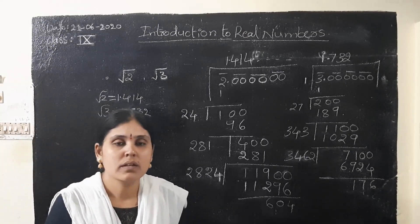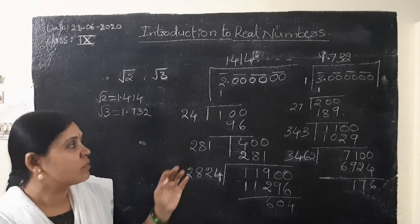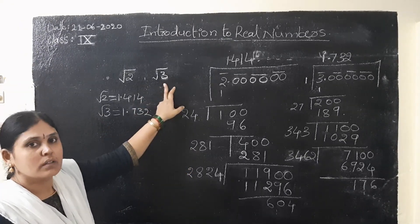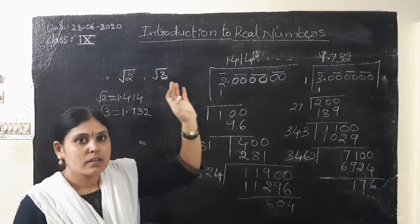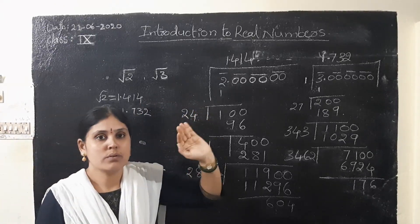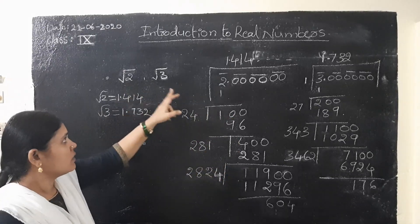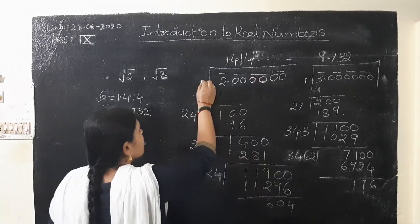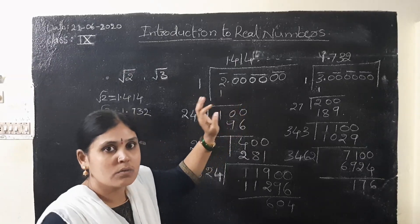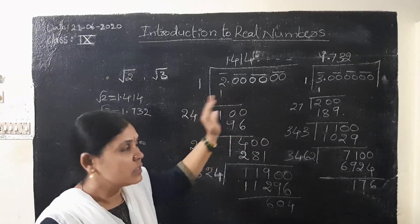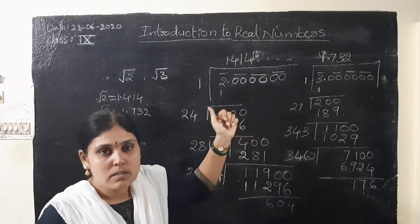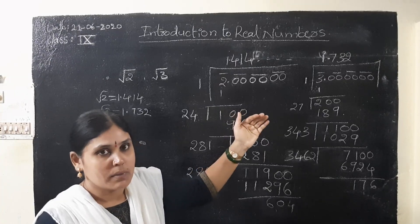Hi children, good morning. Now let us see some values here — root 2 and root 3. I explained about this already in the introduction of rational numbers, just to see how to get the values of root 2 and root 3. Here, see root of a number — how to find out any number in this method only. To find out the square root of any number in this method only. I will explain later what is the root, what is the square root. Just see what I am doing here, after that I will explain.